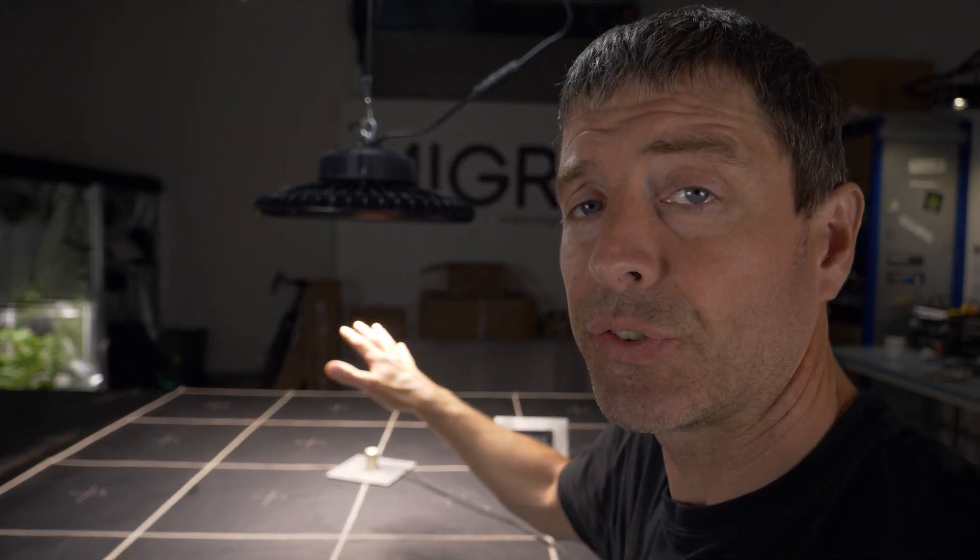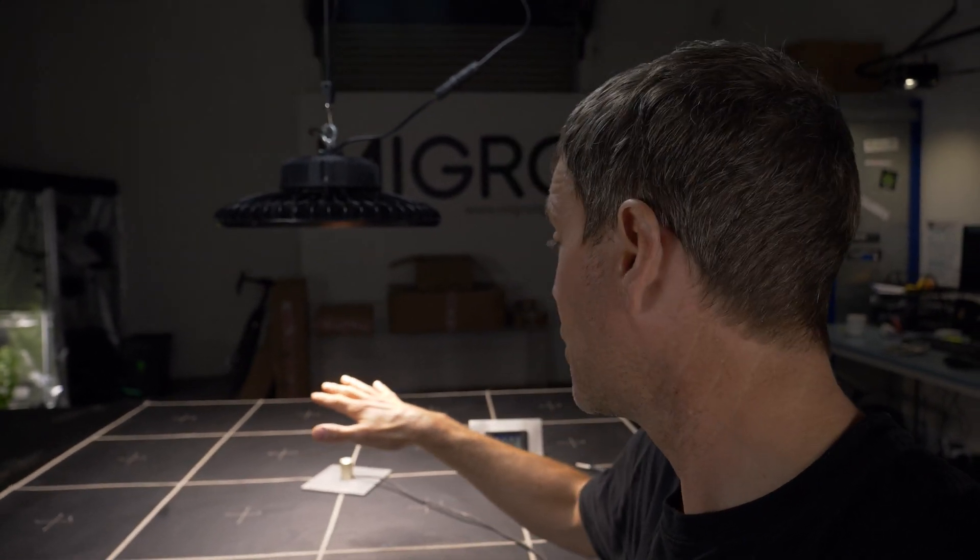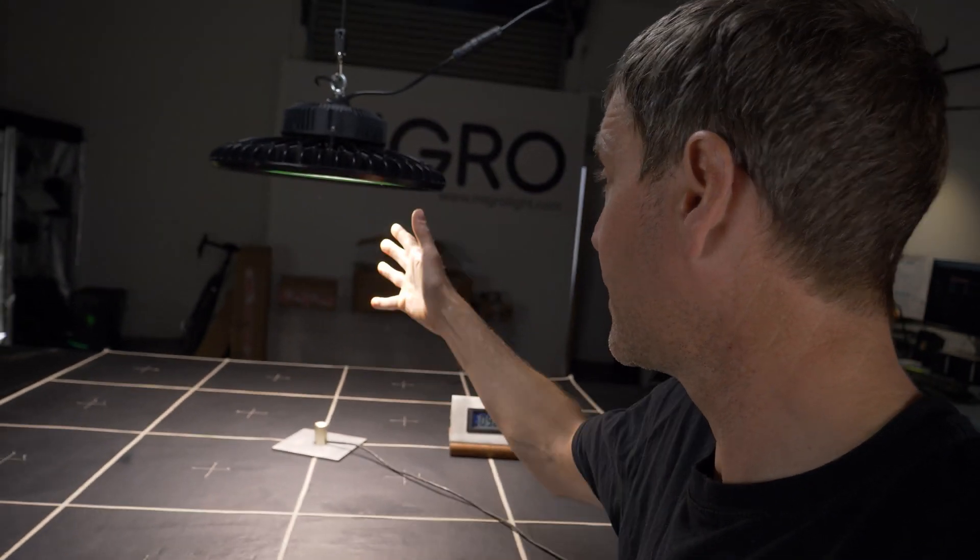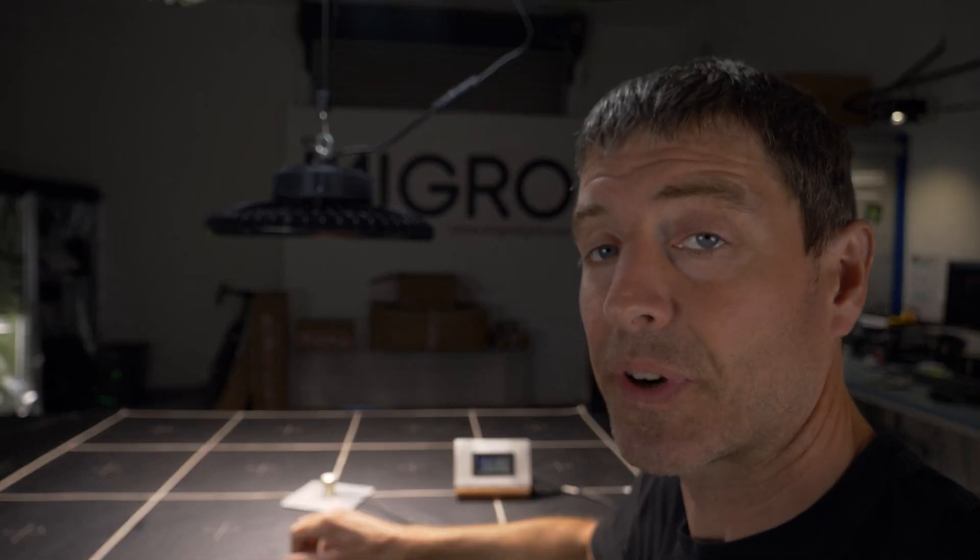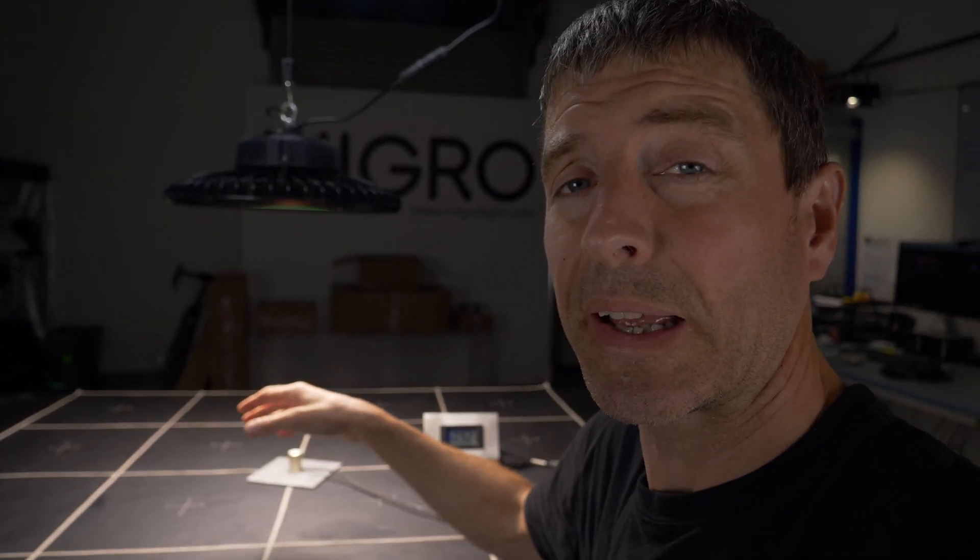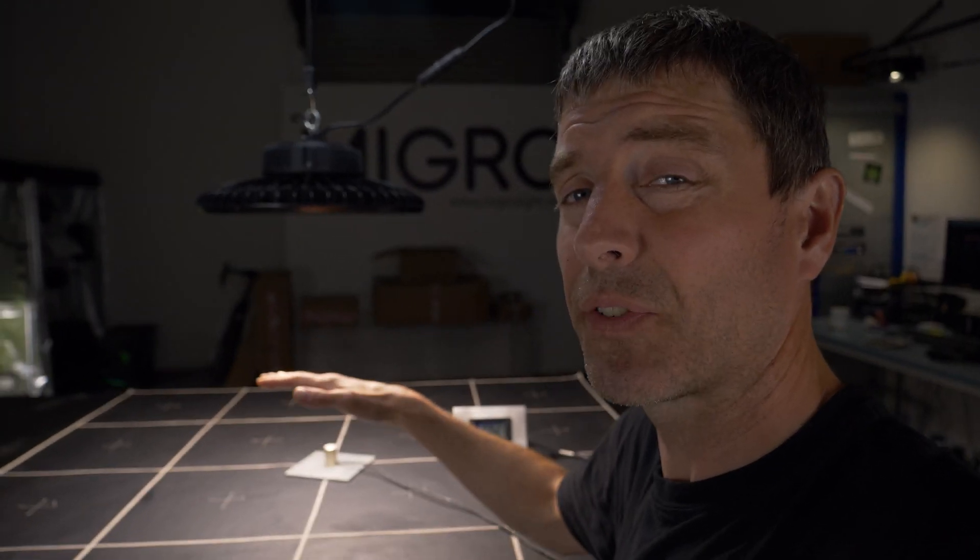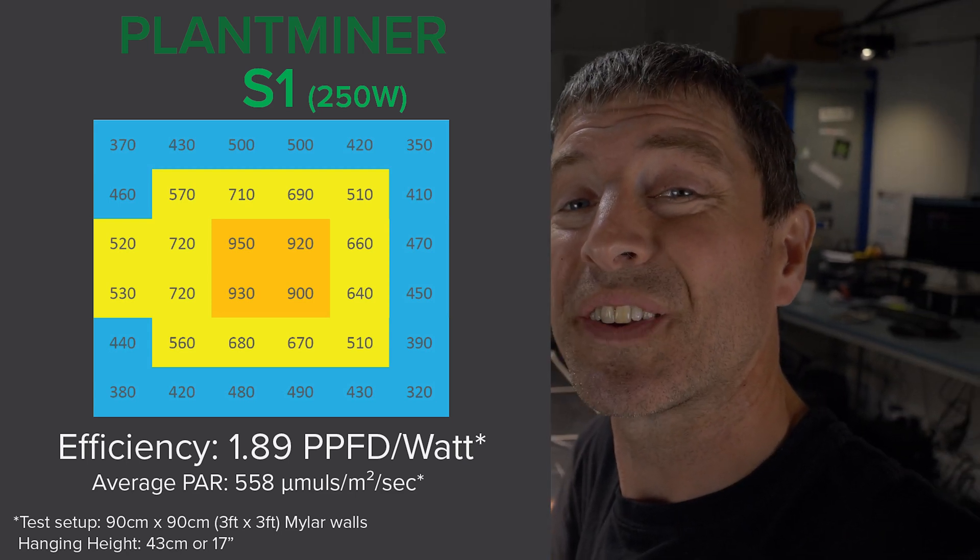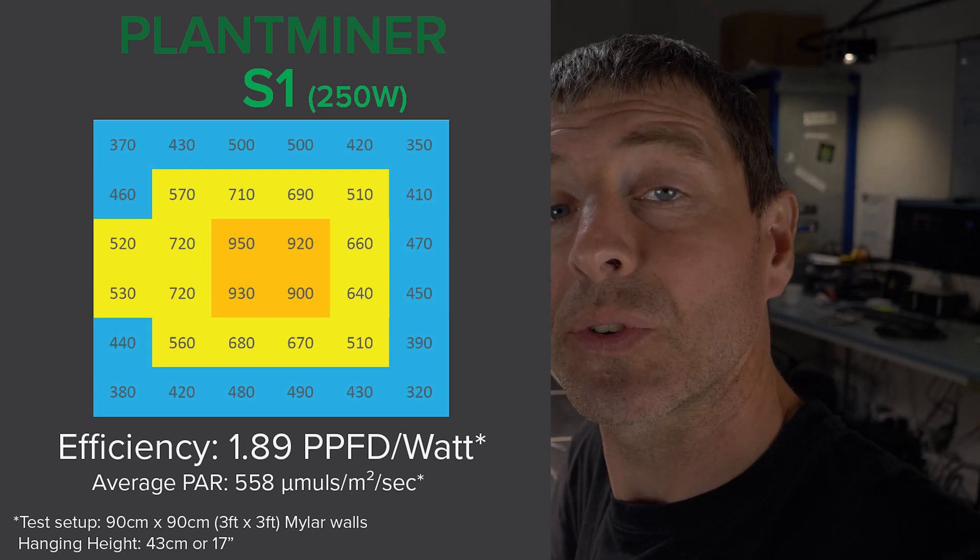And I took those measurements across the 90 by 90 grow area, reflective walls around, and as I said, 17 inch or 43 centimeter hanging height. The result is pretty good, quite a nice spread at that hanging height. It's a little bit of a hot spot in the center but not too bad, spreads out pretty well, and an efficiency of 1.89 micromoles per watt, which is quite good.